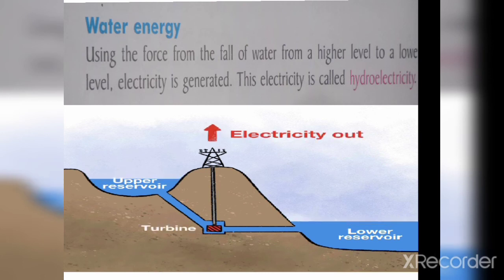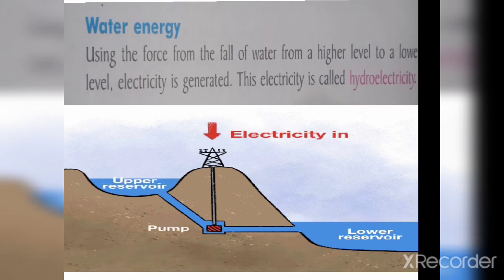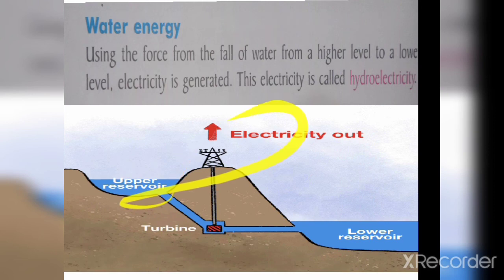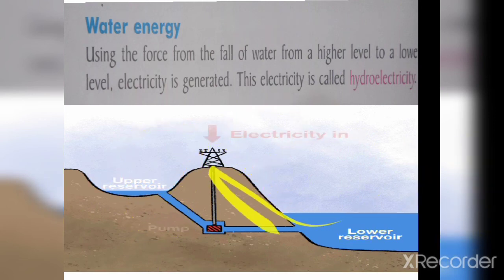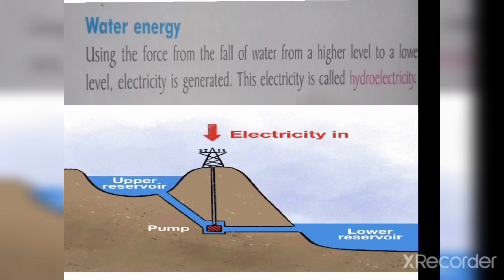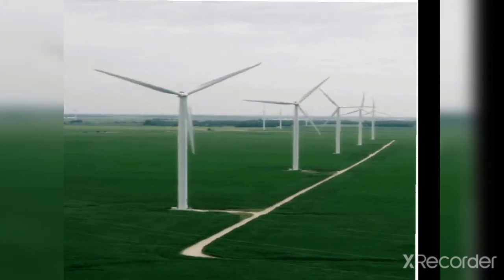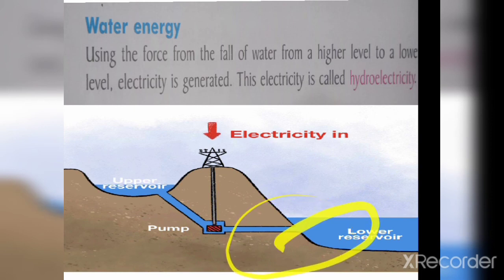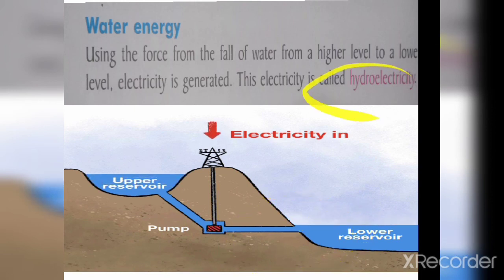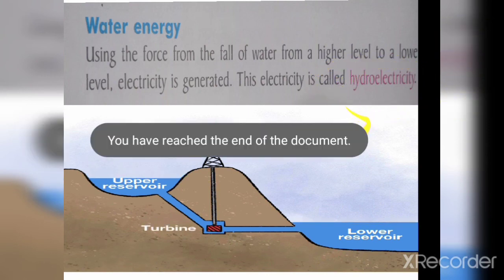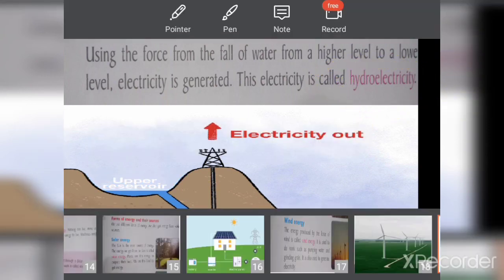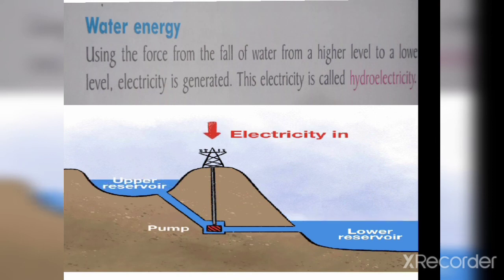Water energy uses the force of water falling from a higher level to a lower level. When water falls from a higher level to a lower level, electricity is generated. This is the most important source of electricity.